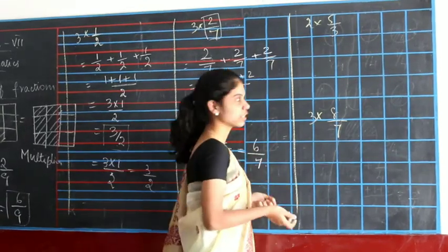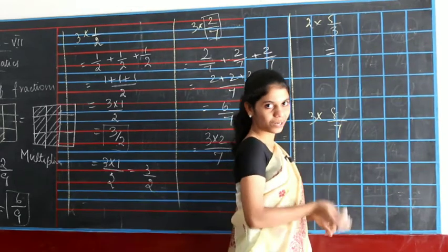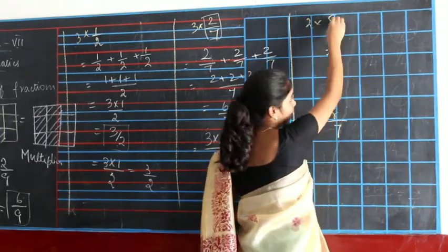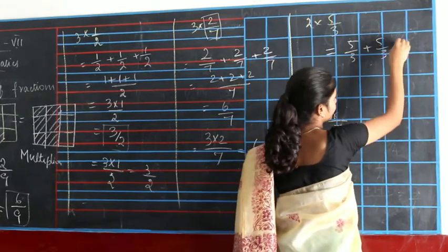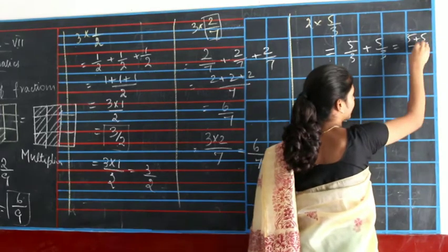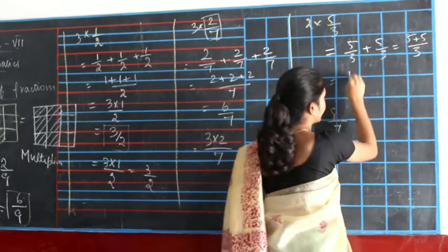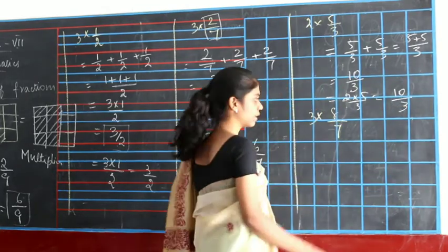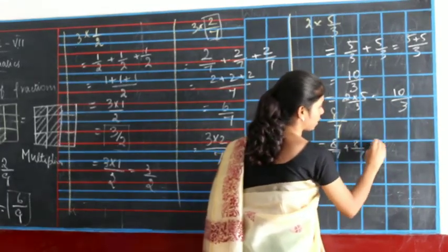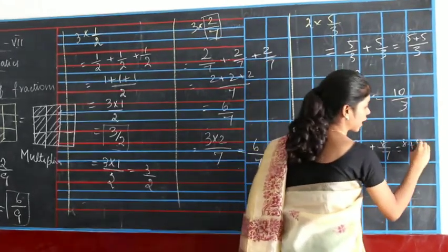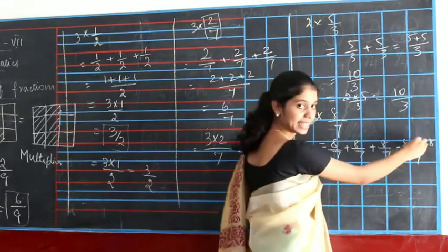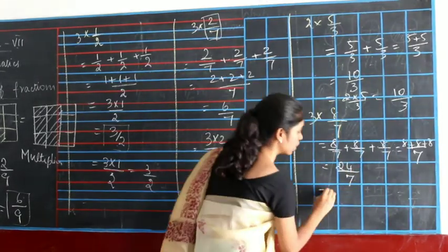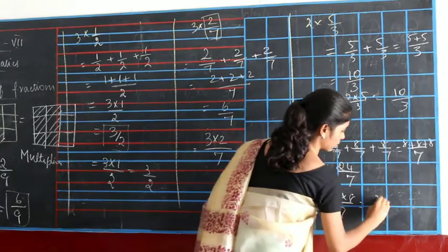Now we are going to see with improper fractions — it is one and the same. We multiply with the numerator and write the answer. We have 2 five-thirds: 5 by 3 plus 5 by 3. This is a like fraction, so 5 plus 5 divided by 3 is 10 by 3, or 2 into 5 by 3 — 2 fives are 10 by 3. Likewise, 3 into 8 by 7: 8 by 7 plus 8 by 7 plus 8 by 7 equals 8 plus 8 plus 8 divided by 7. 8 plus 8 is 16, 16 plus 8 is 24 divided by 7.